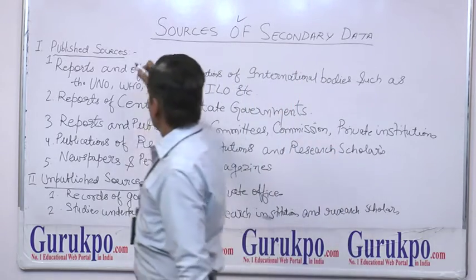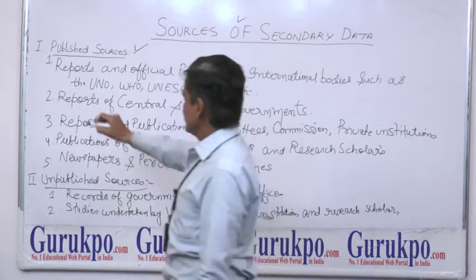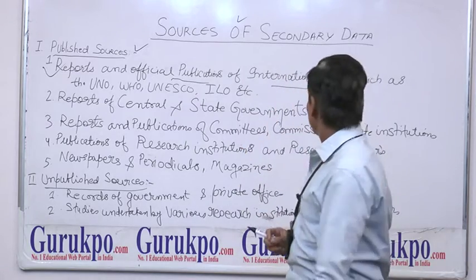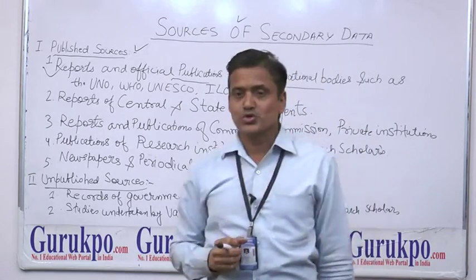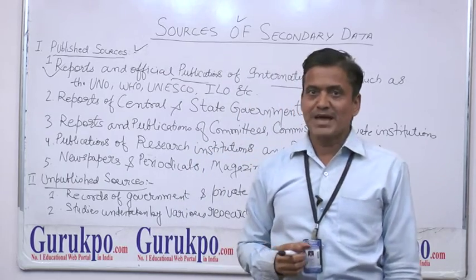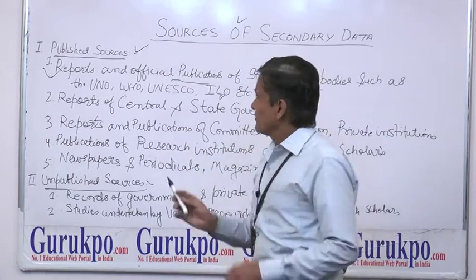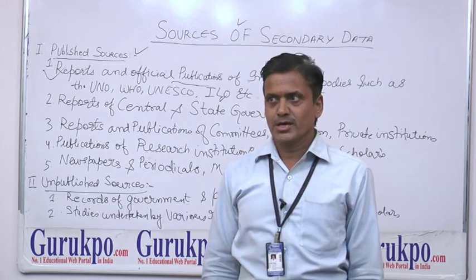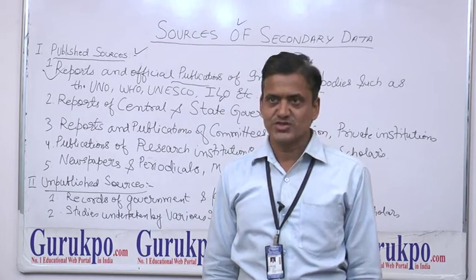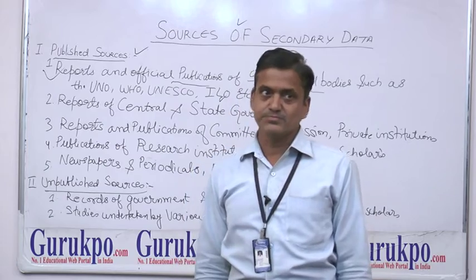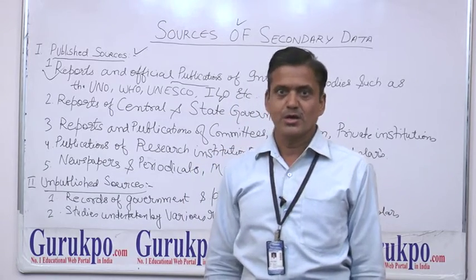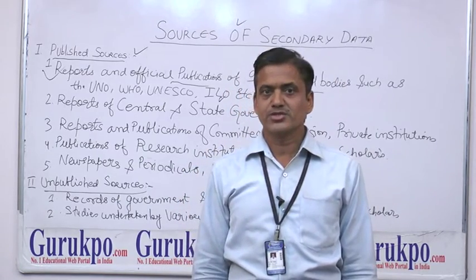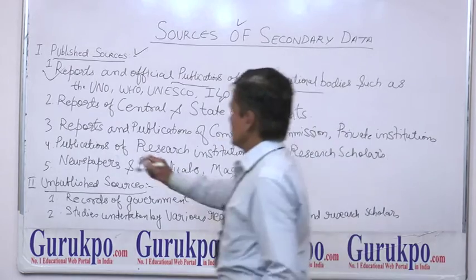First, we discuss published sources of secondary data. Number one: reports and official publications of international organizations such as UNO, WHO, UNESCO, World Bank, ILO, and IBRD. These are very standard quality reports and publications which can be used by any research scholar or research institution.